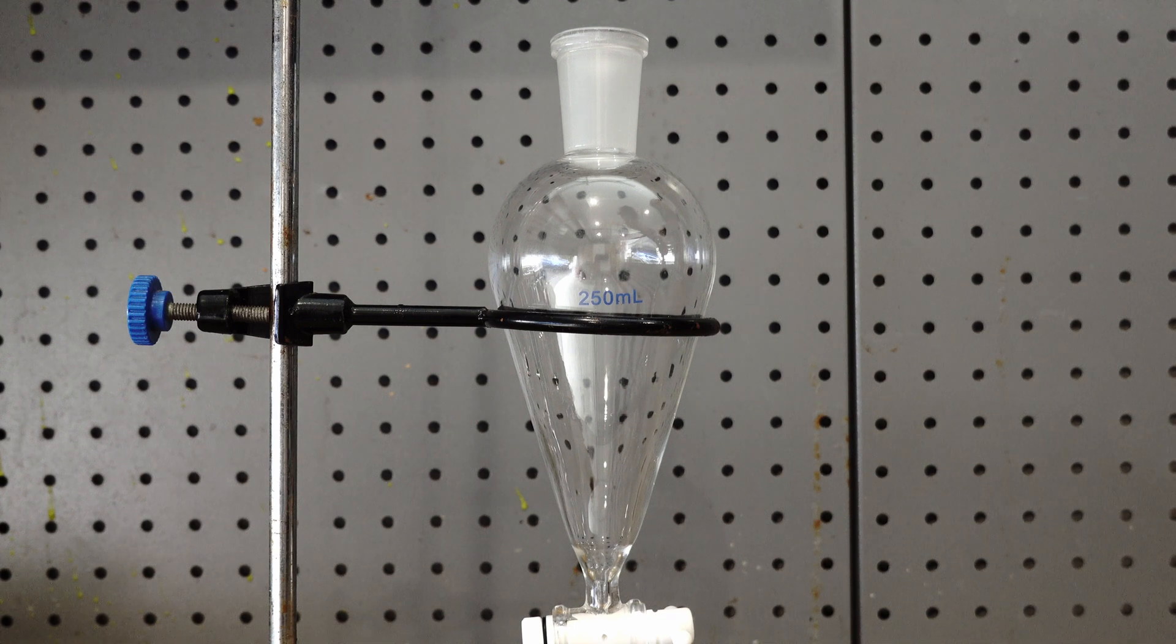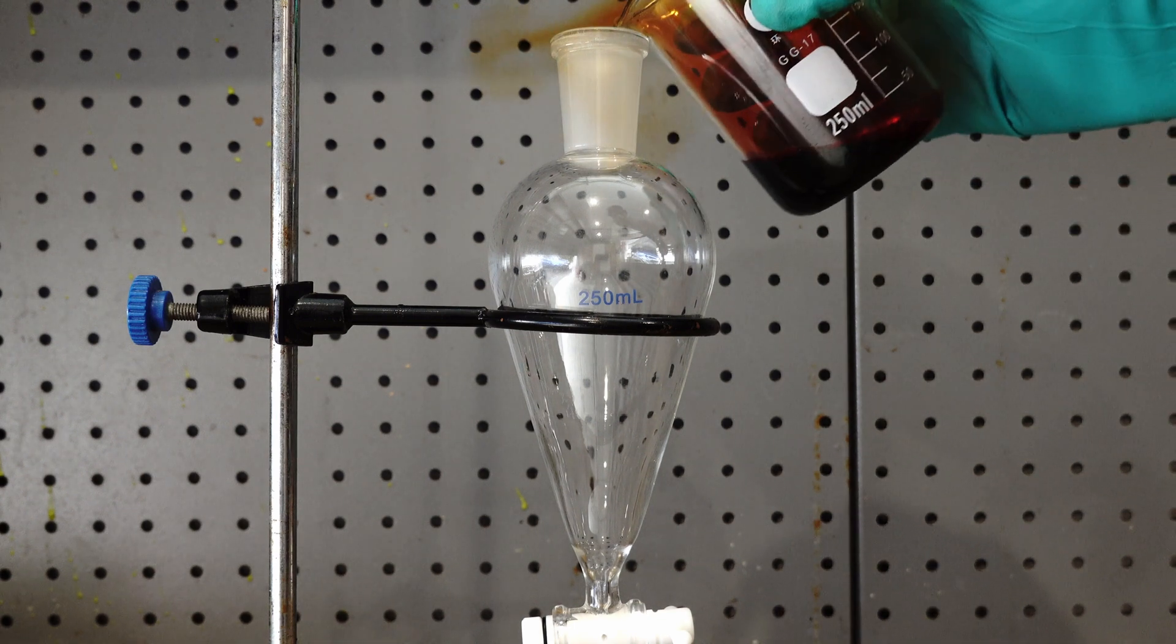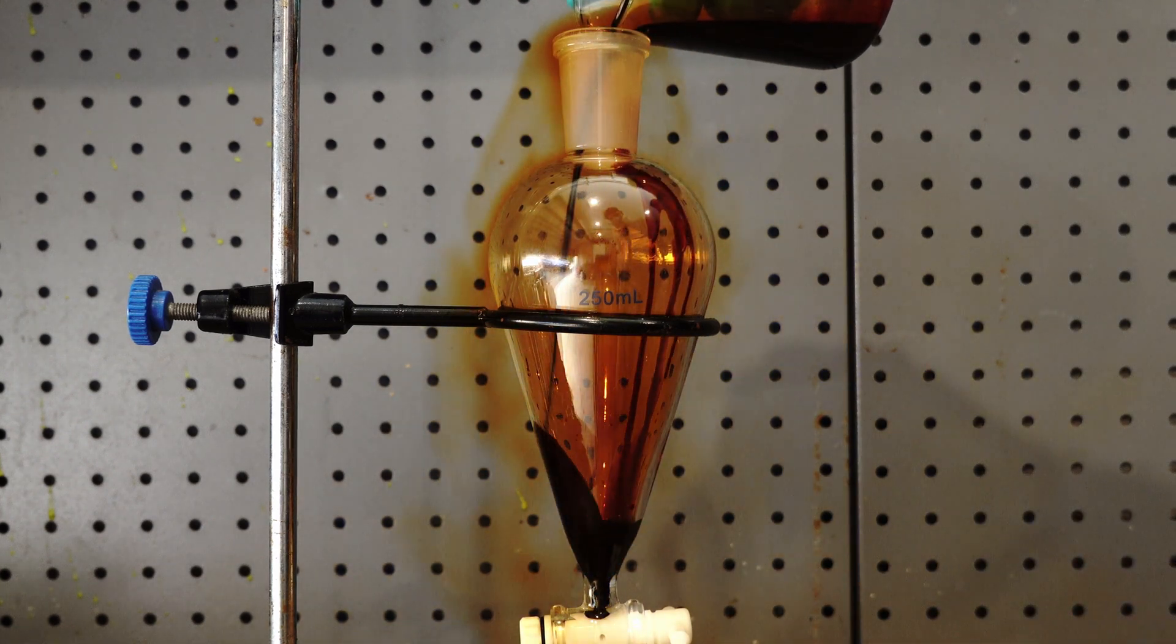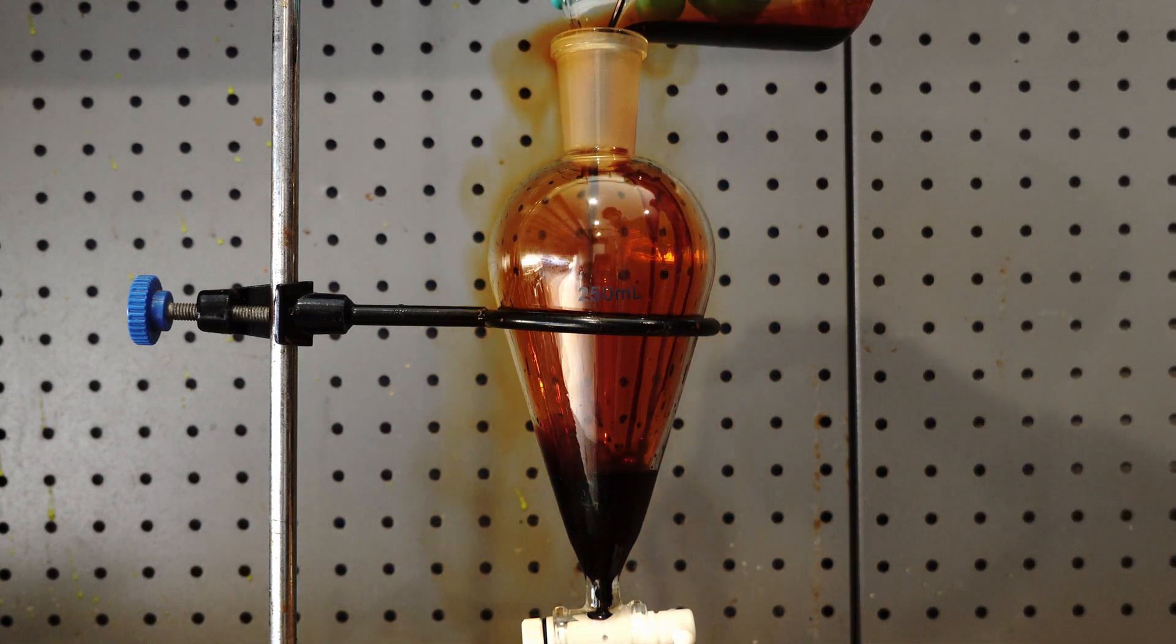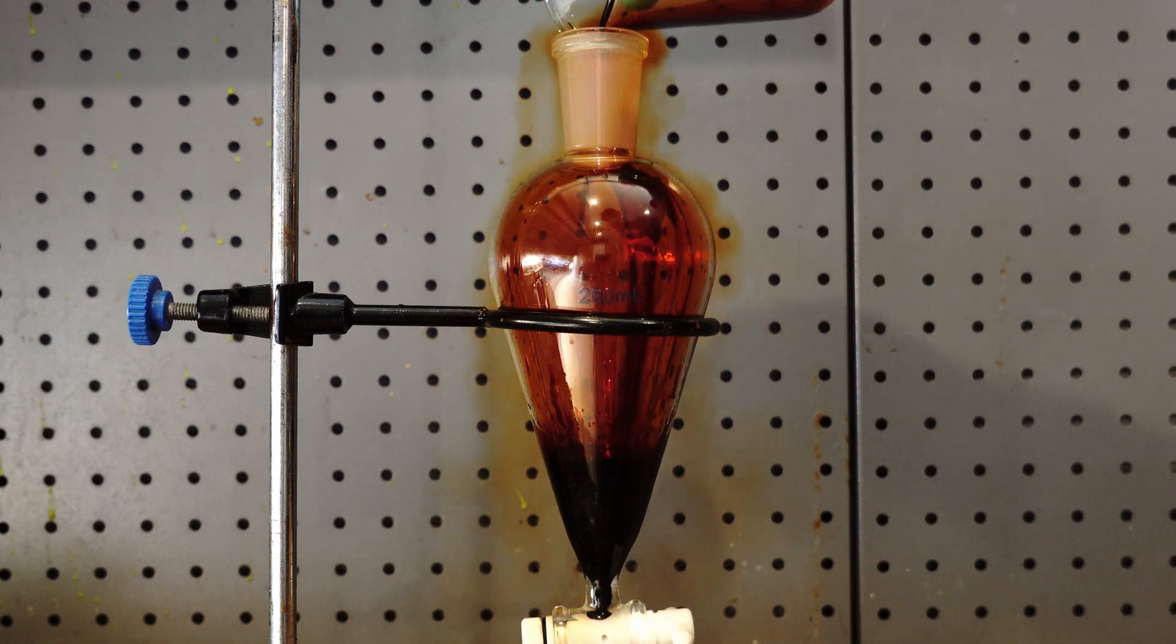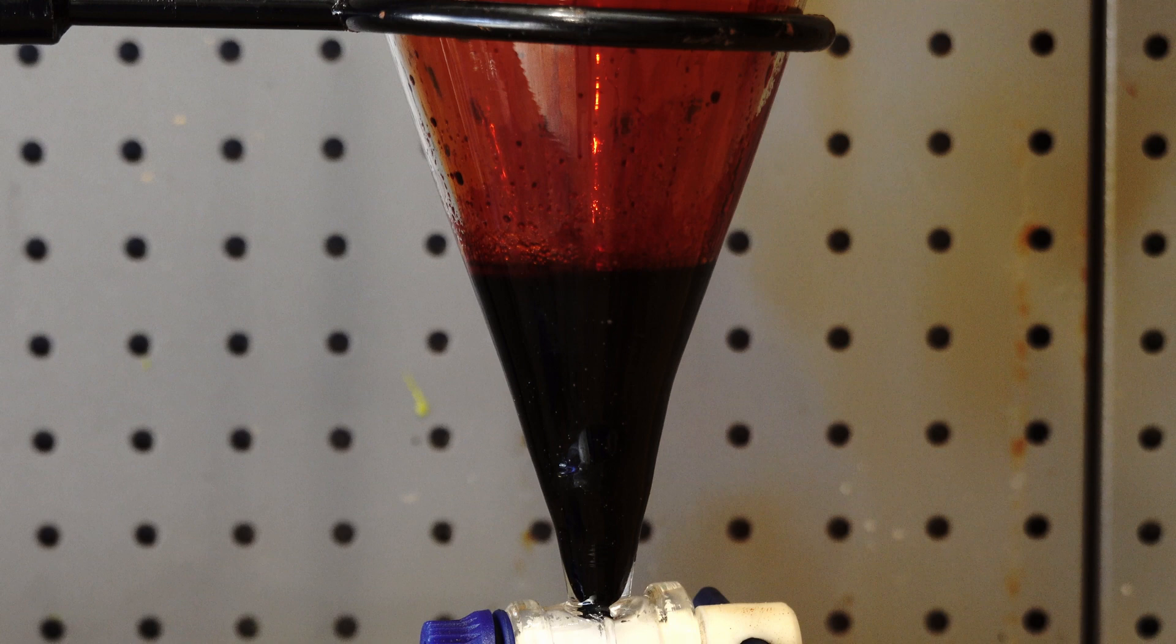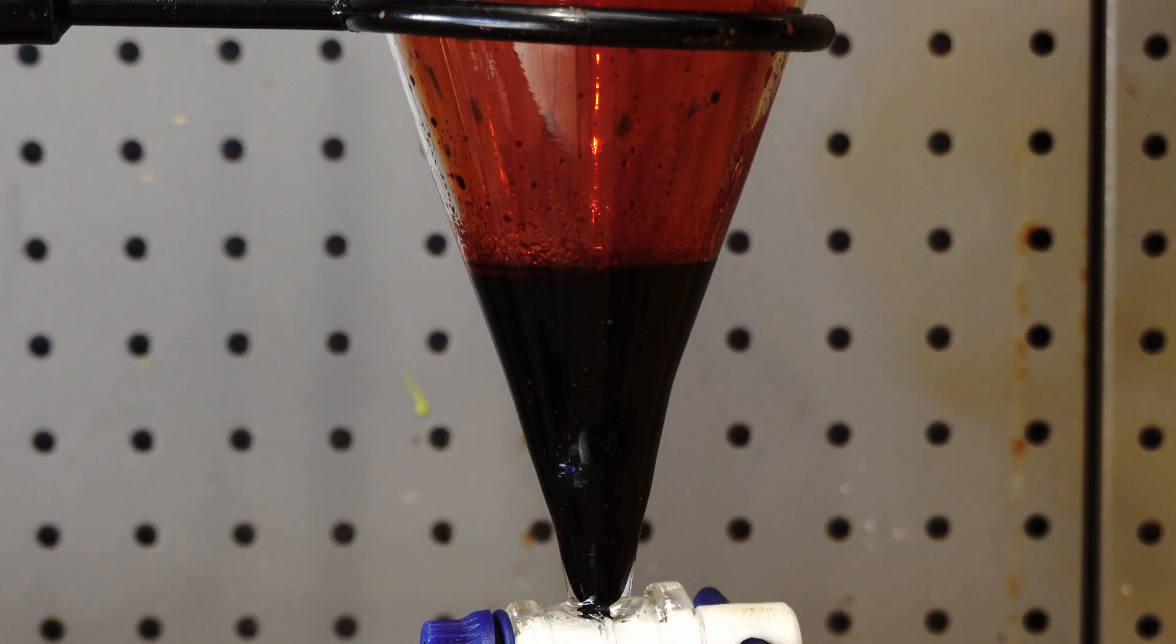Anyway, the next step is to purify our Bromine. And to do this, we add all our Bromine to a 250ml separatory funnel alongside a few milliliters of sulphuric acid. The sulphuric acid in this step acts as desiccant and pulls out all the water from the Bromine.